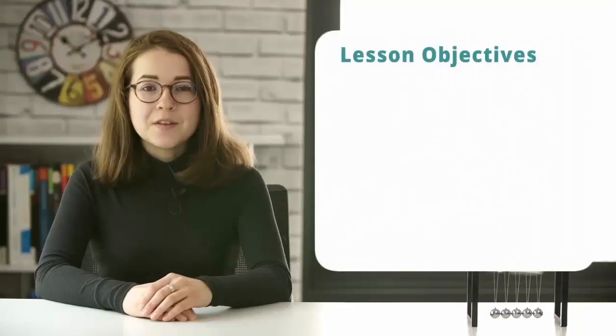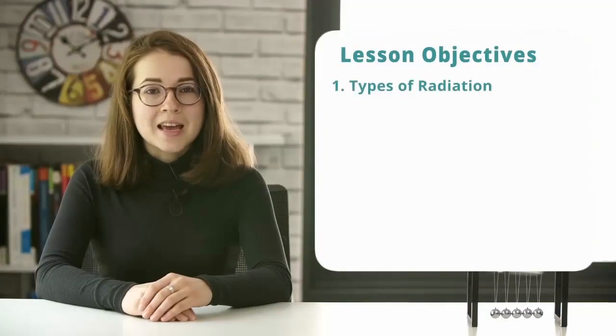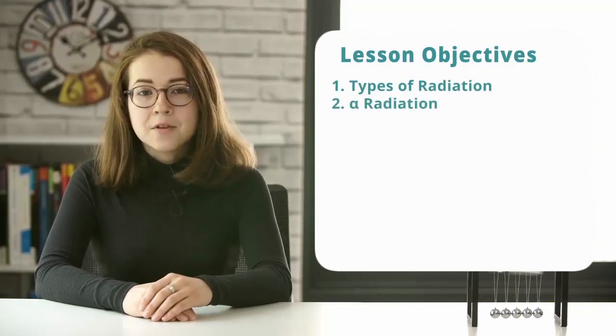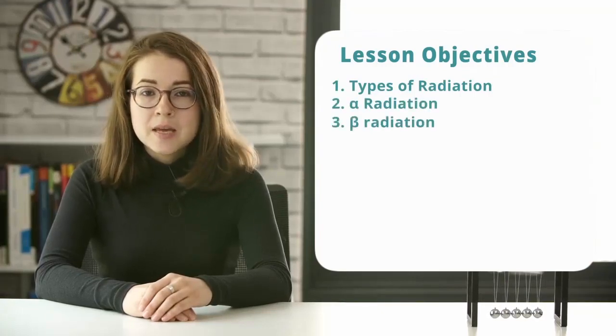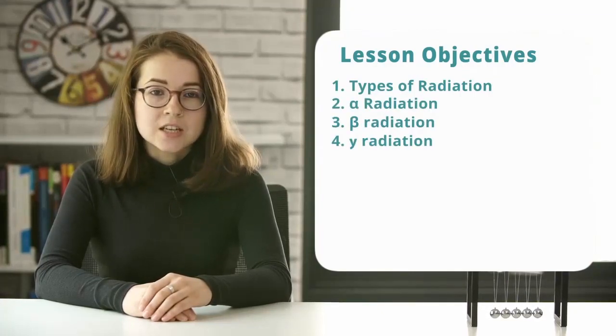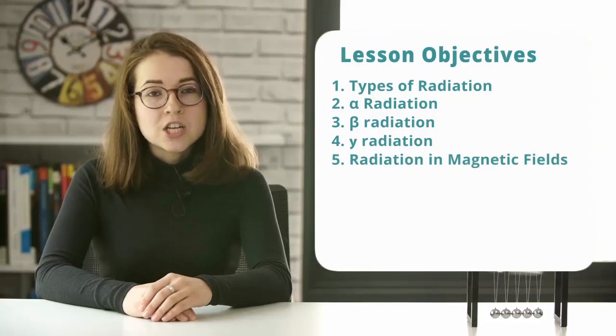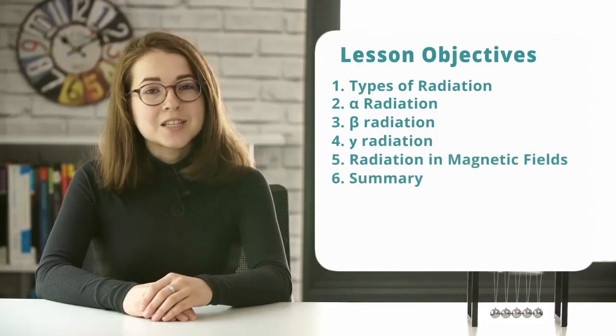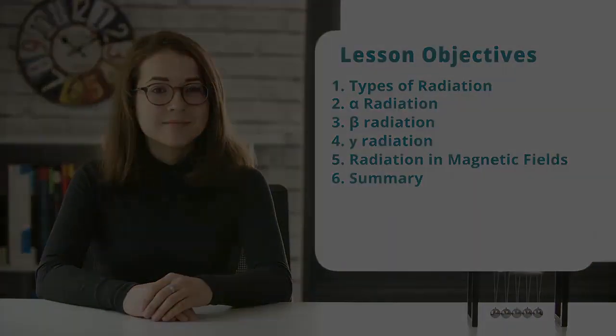Hi guys. In this video we're going to be looking at types of radiation: alpha radiation, beta radiation, gamma radiation, radiation in magnetic fields, and then we're going to finish with a summary.